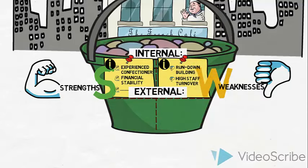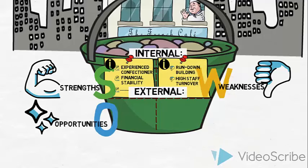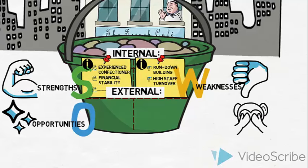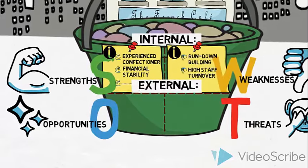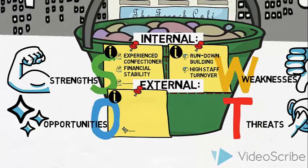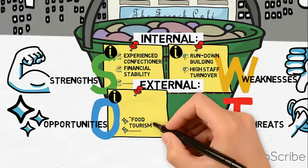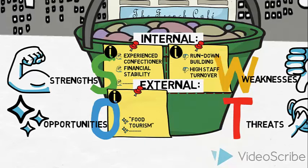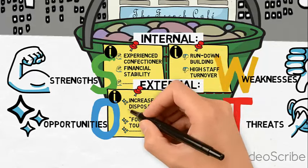Secondly, we collect and present all the external information that we find relevant. We will divide this into what can be considered as opportunities — these are external developments that we might want to take advantage of. Some of the opportunities discovered are food tourism: an increased number of tourists actively seek out high quality food experiences. And a general increase in disposable income.